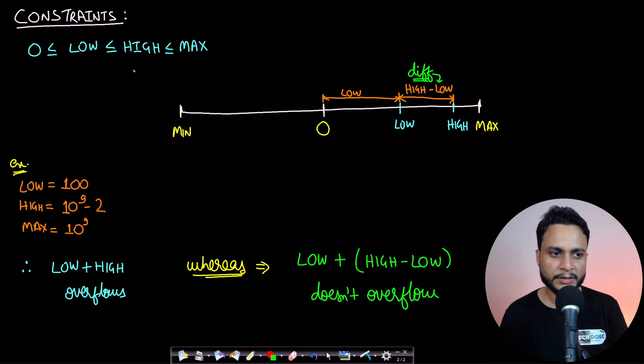Let's see by taking an example. The variables in binary partition are low, mid, and high. The constraint here shows that low and high range from zero to max where low will always be less than or equal to high.